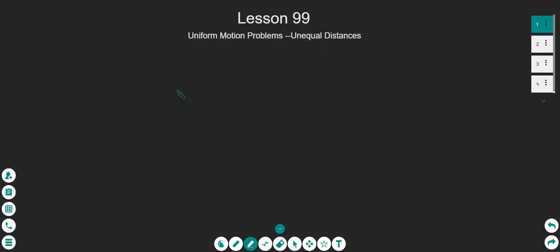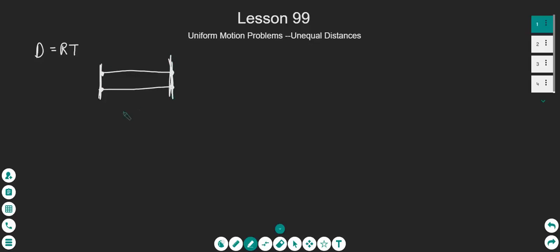We've been talking a lot in previous lessons about story problems that deal with distance equals rate times time — that golden formula. We've dealt with problems where the distances were equal. So maybe we had two people that left the same starting point and they both ended at the same ending point.